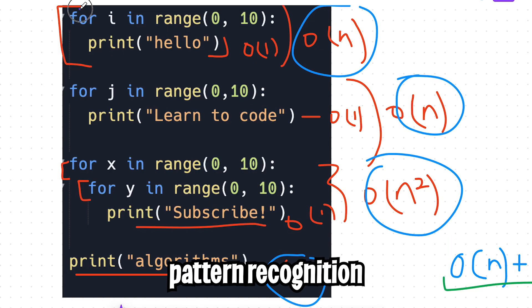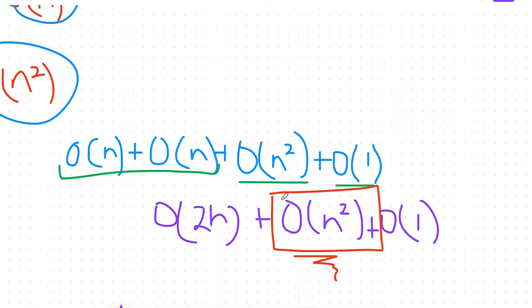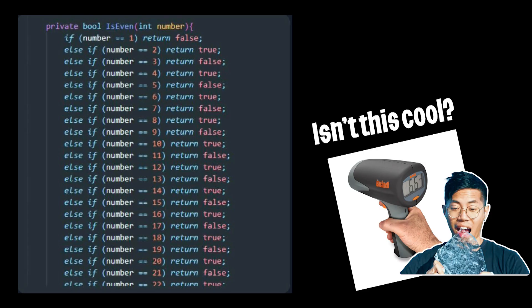That wasn't too bad. All we did was recognize that we had for loops, a nested loop, and basically constant statements. And then after that, we just did some basic math to come up with the final runtime. And that's basically how you analyze programs for their runtimes.